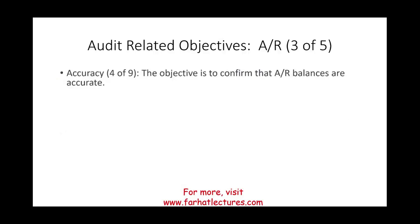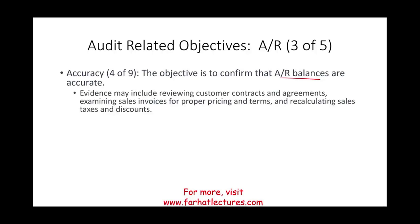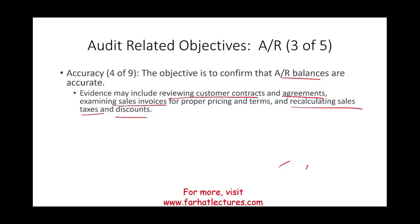The fourth audit-related objective is accuracy — confirming that the balance is accurate. Evidence may include reviewing customer contract agreements, examining sales invoices for proper pricing and terms, and recalculating sales taxes and discounts. You want to make sure the number shown — whatever that number is — is correct.